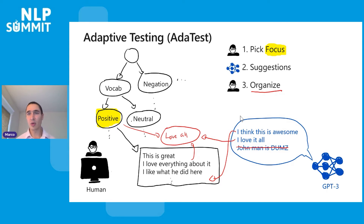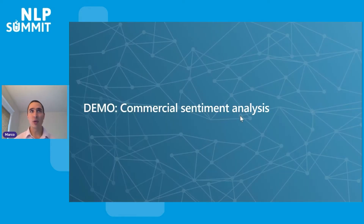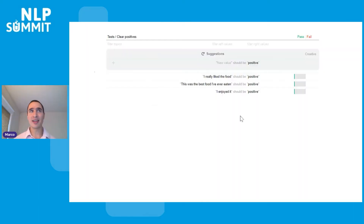These three simple steps can be repeated many times, filling in the tree. Let me do a demo showing these steps in action — we're testing here a commercial sentiment analysis system. I won't tell you which it is, but it's one of the ones we tested in the CheckList paper, and it doesn't matter because we can break them all.